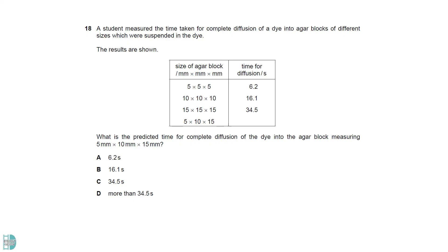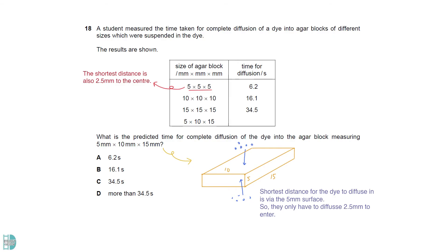The shortest distance for the dye to diffuse to the center of the last block is 2.5mm. This happens when it moves in via the smaller surface. With that said it will be the same for the first block as the shortest distance to diffuse in is 2.5mm as well.